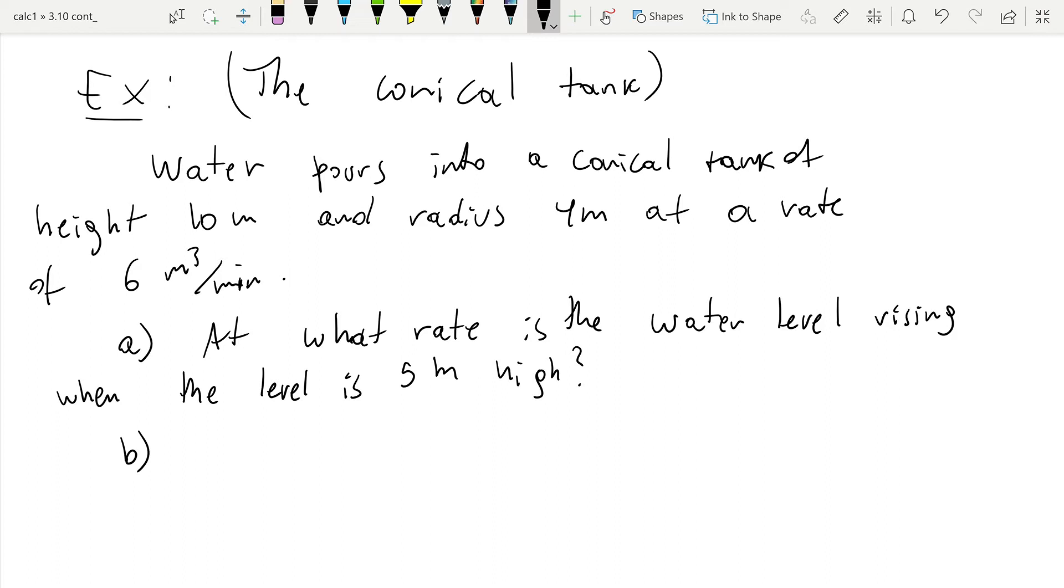At what rate is it rising when the level is 5 meters high? Instead of a time, like in the previous problem where we were asked to find h prime at one, we're asked to find the rate of change when the height is known to be 5 meters. So this problem is slightly different from the previous one in that sense.